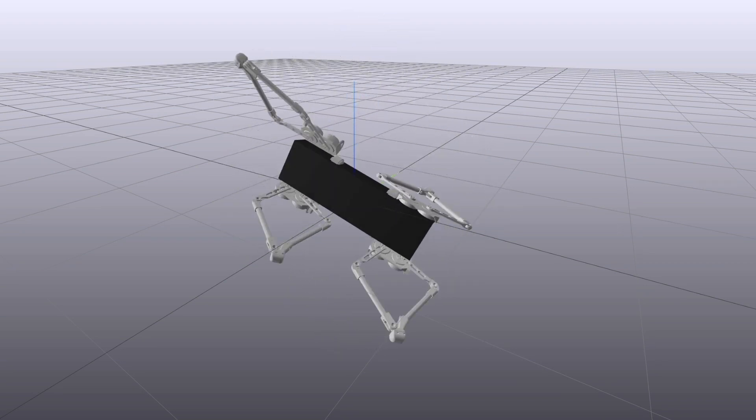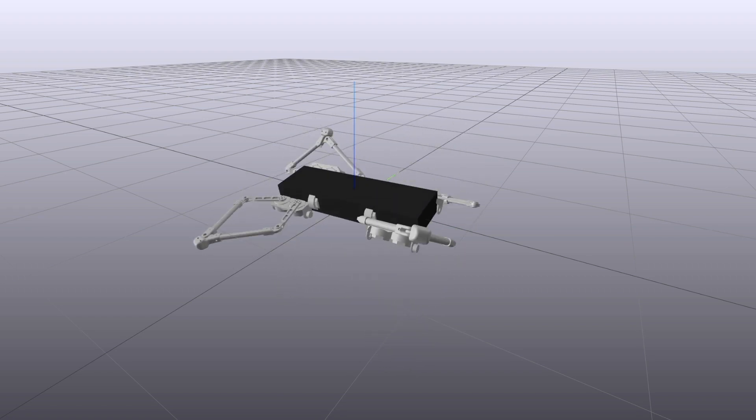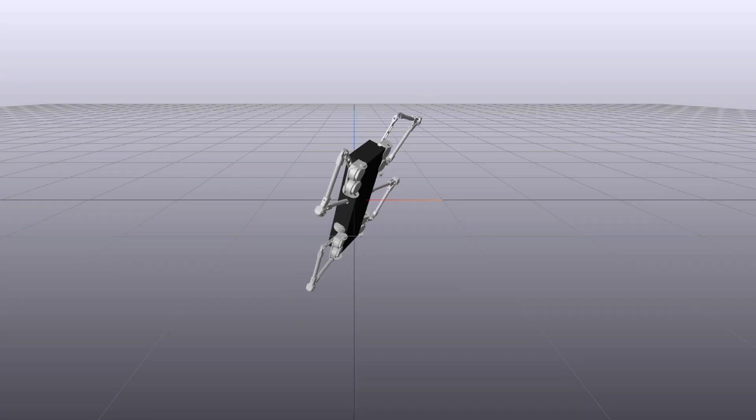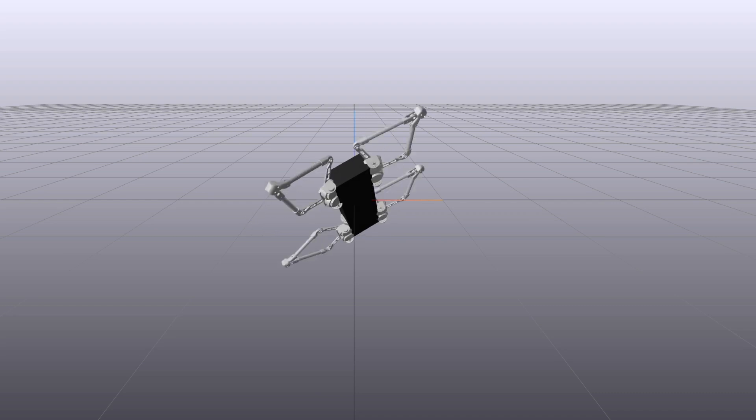Regarding implementation, Drake has been utilized to accurately model the quadruped, while Ikatos was employed to deploy the proposed NMPC.